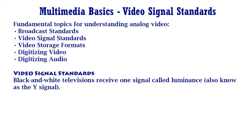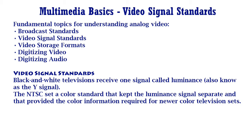In this video we are going to study about Video Signal Standards. Black and white television receives one signal called Luminance, which is also known as the Y signal. Each screen's pixel is defined as some range of intensity between white, i.e. total intensity, and black, i.e. no intensity.